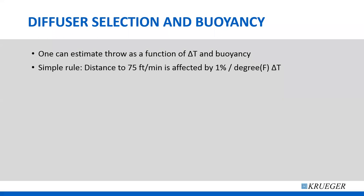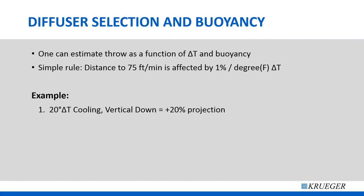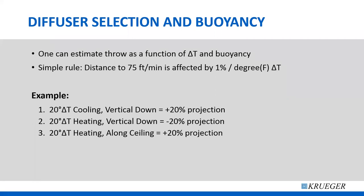The rule is 75 feet-per-minute, 1% per degree delta T. Let's say a jet has a 10-foot throw down and I have 20 degrees of cooling — it's going to go 20% further, or two feet further. That same jet with 20 degrees of heating is going to go 20% shorter, or only eight feet. Going from 20 degrees cooling to 20 degrees heating results in a 40% change in throw. That's a big deal because you have to size the diffuser and airflow so the heating airflow makes it to within four feet of the floor — but then the cooling airflow will enter the occupied zone because it goes 40% further. Along a ceiling, hot air goes further by the same rule: 1% per degree delta T at 75 feet-per-minute.